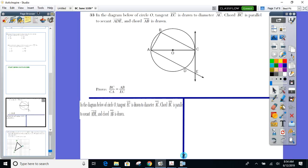So, August 2017, number 33. You're asking how much should we write in? You don't need to write it in the diagram circle O, but you know, write in tangent EC is drawn to diameter AC, chord BC parallel, all that rest of it.